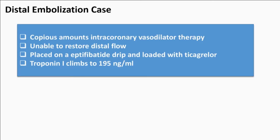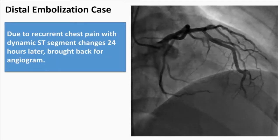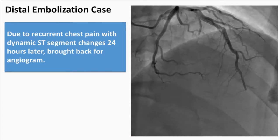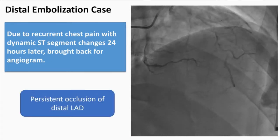As most of us would do, we administered copious amounts of intracoronary vasodilators. However, that didn't work. The patient was placed on a 2B3A inhibitor drip and loaded with ticagrelor. Despite multiple attempts to improve outflow, it wasn't successful. Troponin climbed to 195. The patient had recurrent chest pain and dynamic ST changes, and was brought back 24 hours later with persistent occlusion of the distal vessel.